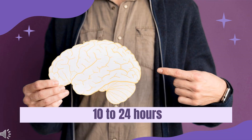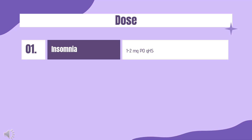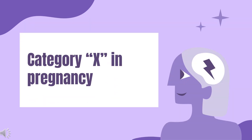Half-life: The range of estimates for the mean elimination half-life of estazolam varies from 10 to 24 hours. Dose: Insomnia — 1 to 2 mg PO QHS.